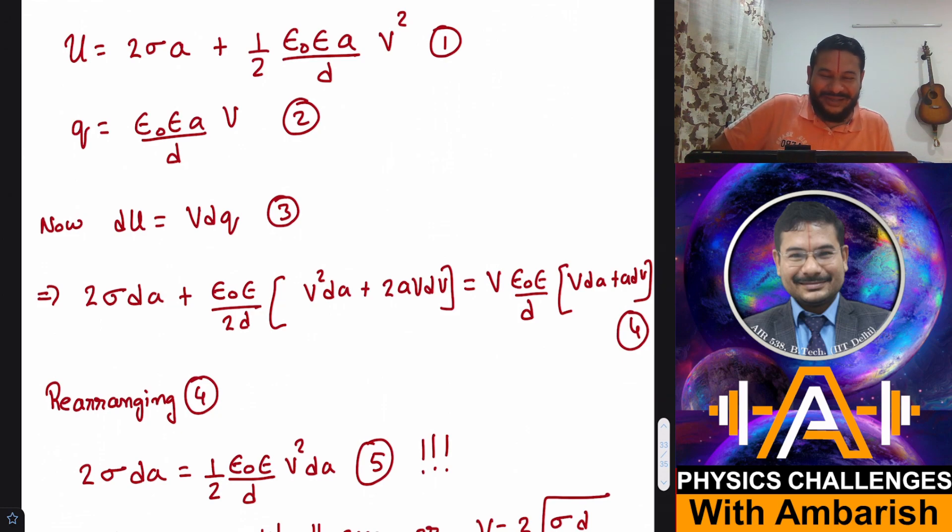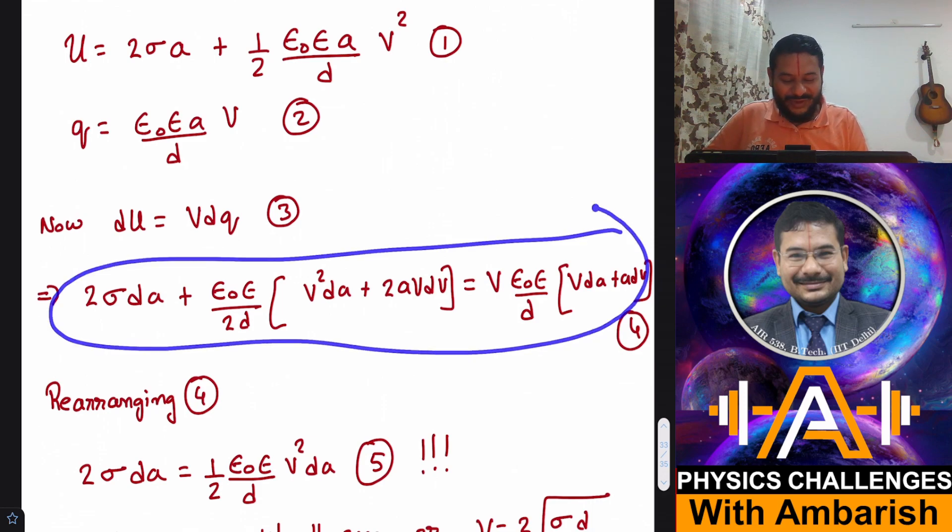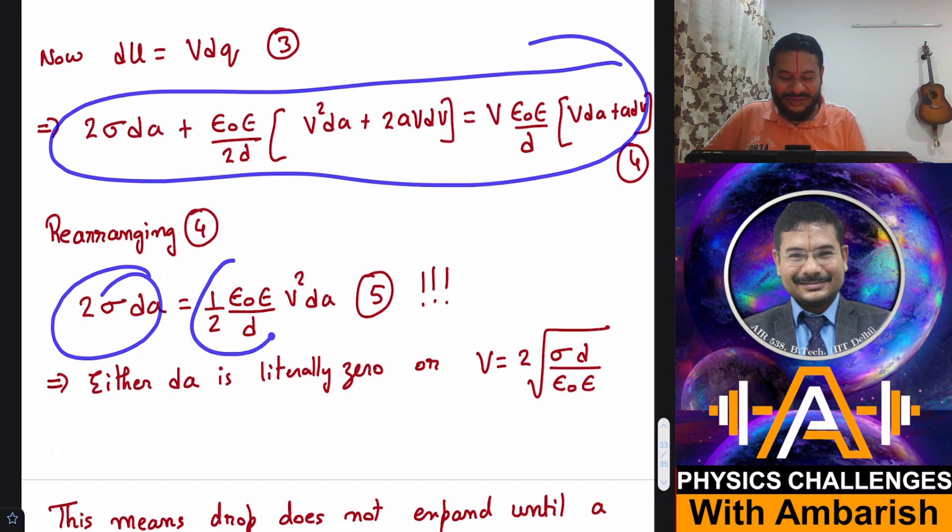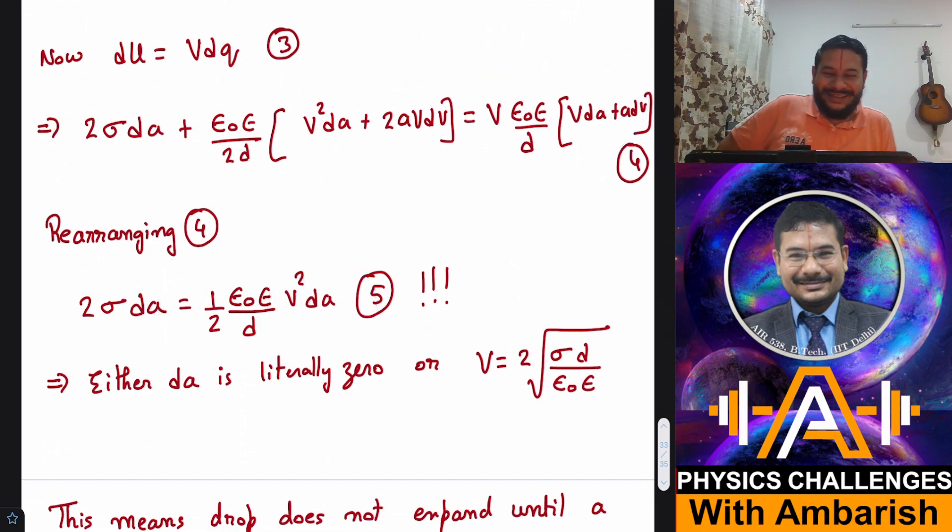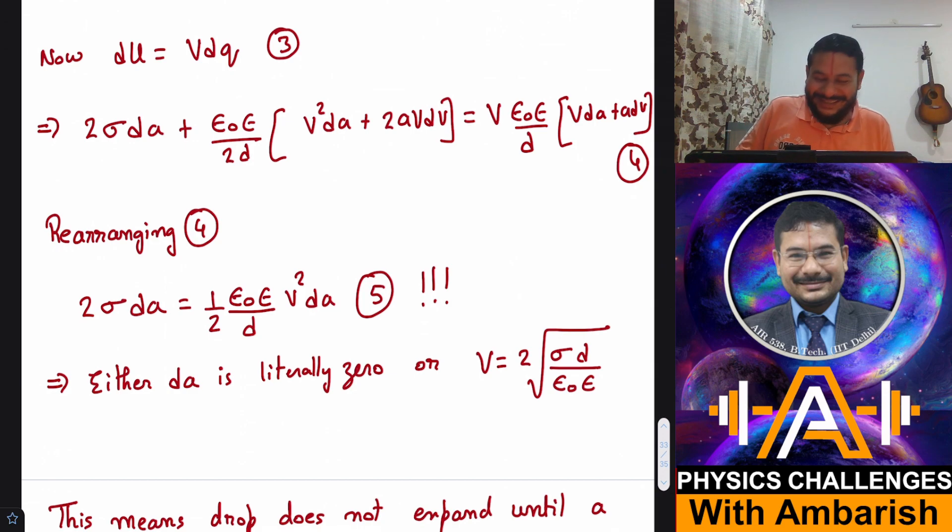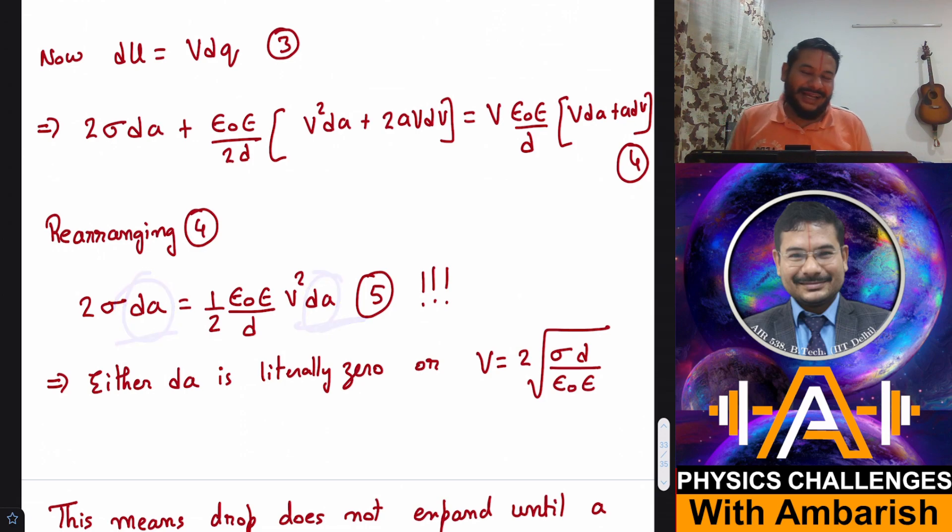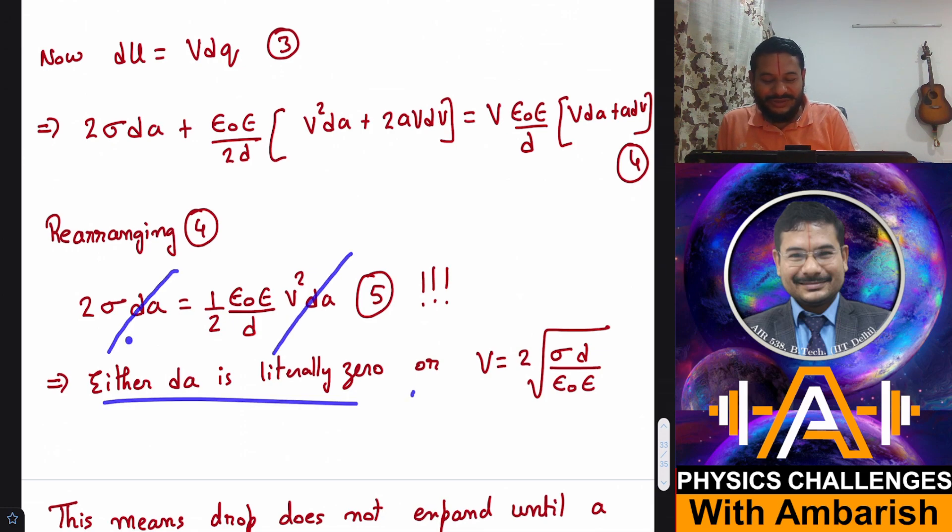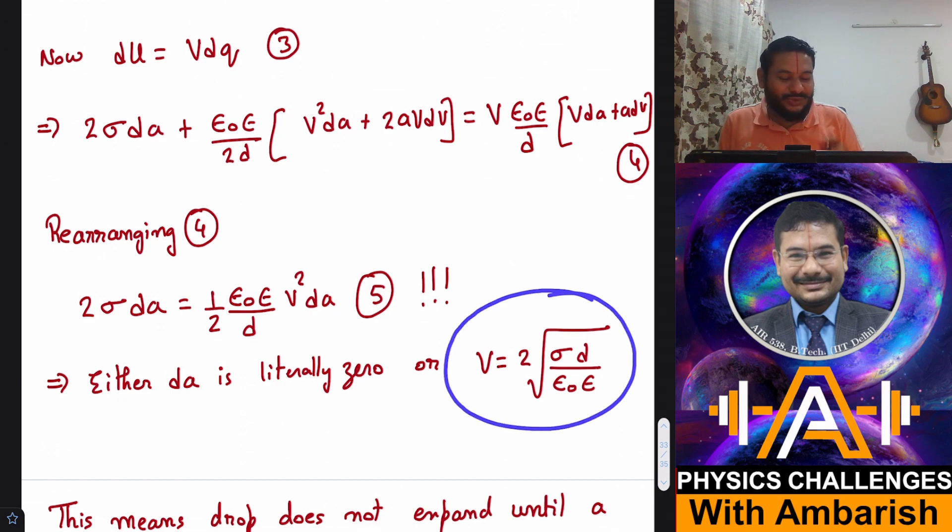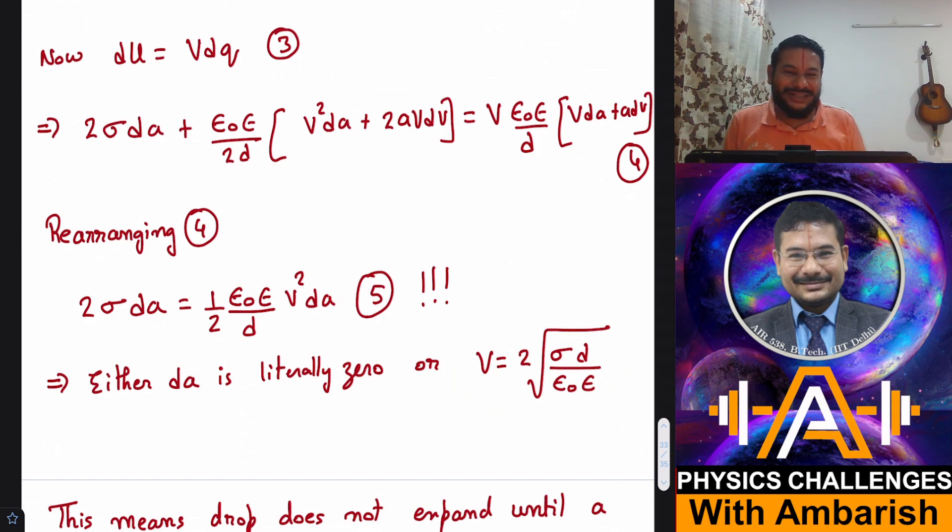Now, when you rearrange the terms, you will be surprised what's going to happen. You just rearrange this equation. What do you get? You get 2 sigma dA is equal to half epsilon epsilon V square into dA. So now this is irritating, right? You have small d over here and there is small d over here. What were you expecting? You were expecting that you will get some differential equation between area and voltage and then you will integrate it and you will get some nice relationship between voltage and area. But this is really weird. What you have got, if you see, if this equation is to be valid, what's the possibility? Either dA is literally zero on both sides. And the only other possibility is that you cancel off dA on the both sides. If dA is non-zero, you can cancel off dA and then V is 2 root sigma D by epsilon 0 E. That means what? We are getting a constant value of voltage and not a voltage as a function of area of spread.